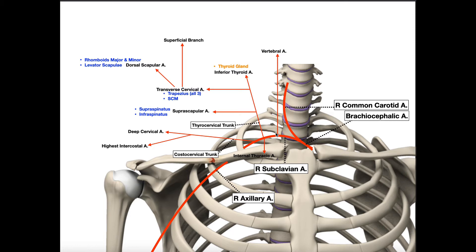Regardless of how you get them, we have a right and a left subclavian artery. We're going to focus on the right one, but understand that once you have the subclavian artery, they're the same on both sides. The right subclavian originates from the brachiocephalic artery, while the left subclavian artery originates from the arch of the aorta.